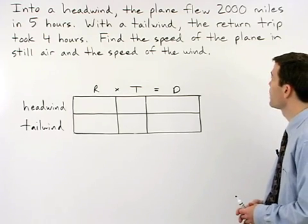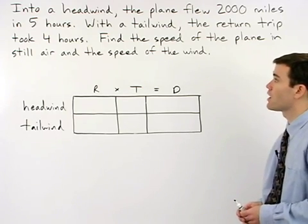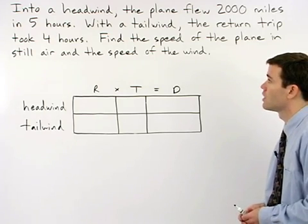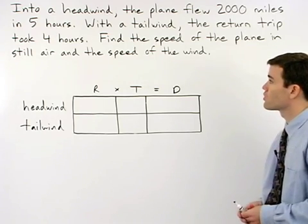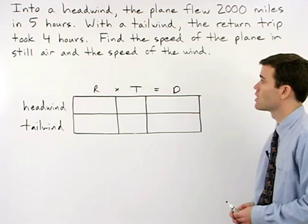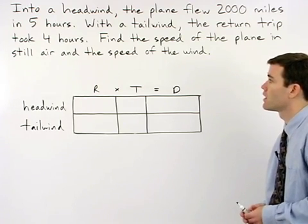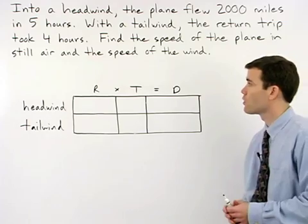Into a headwind, the plane flew 2,000 miles in five hours. With a tailwind, the return trip took four hours. Find the speed of the plane in still air and the speed of the wind.